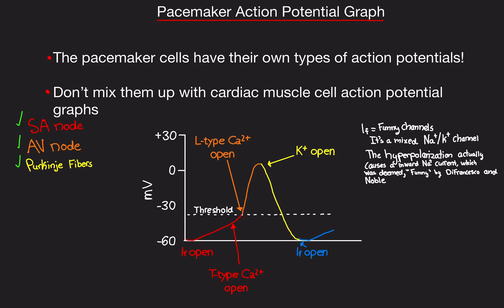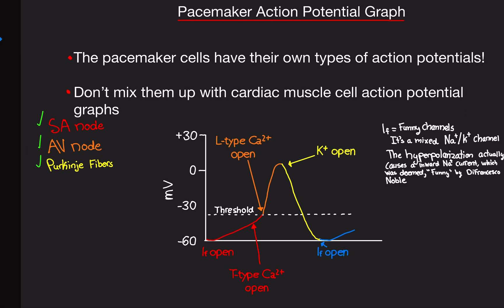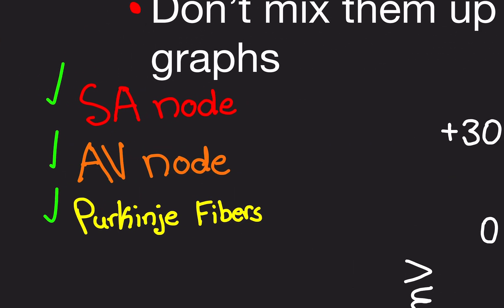All right, welcome back. And as we're going to go over the pacemaker action potential graph, the pacemaker cells have their own types of action potentials. The pacemaker cells are the ones that actually create the electrical activity in the heart. These would be the SA node, AV node, and Purkinje fibers.